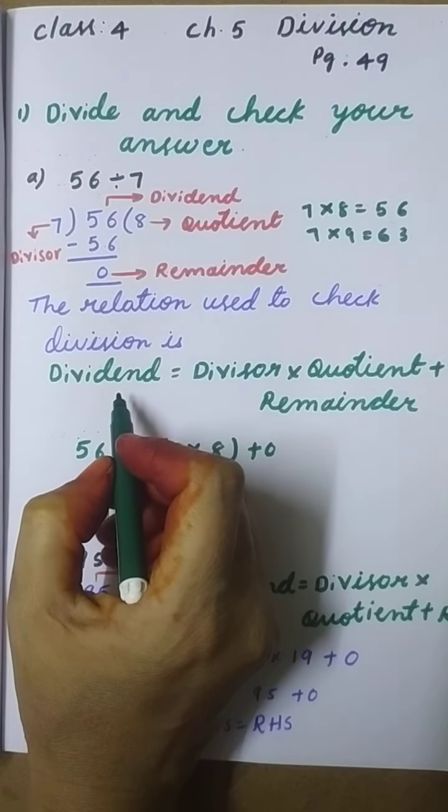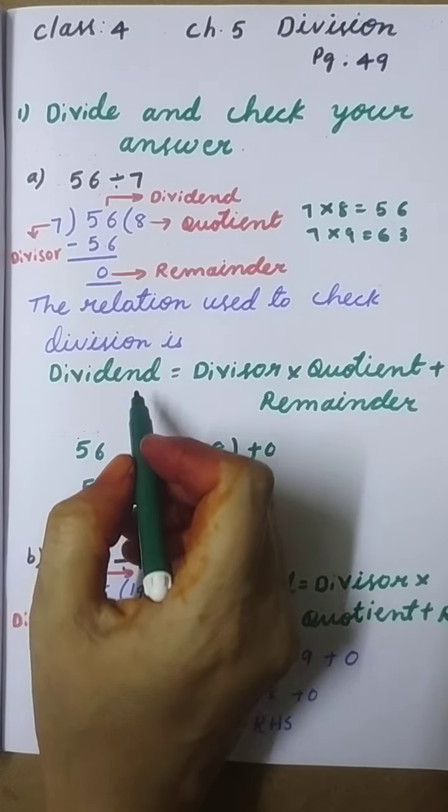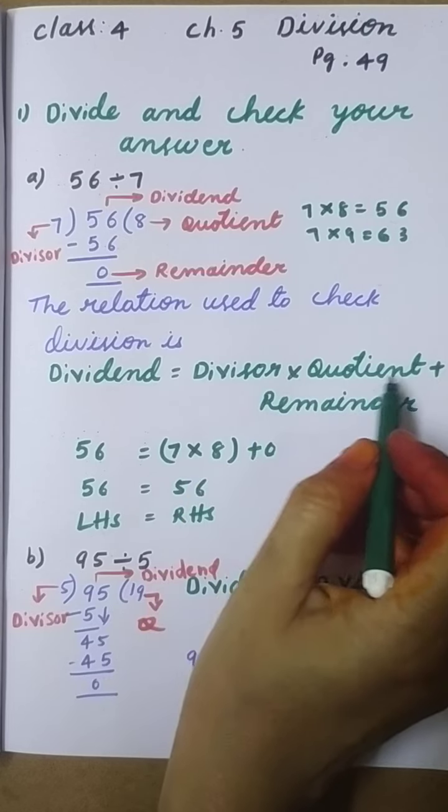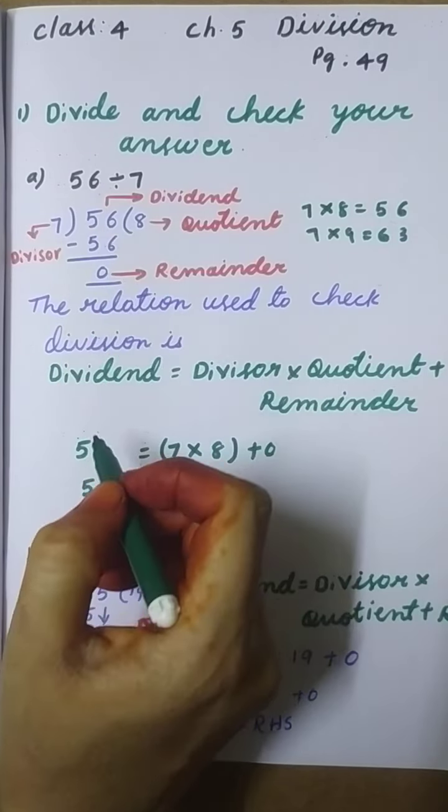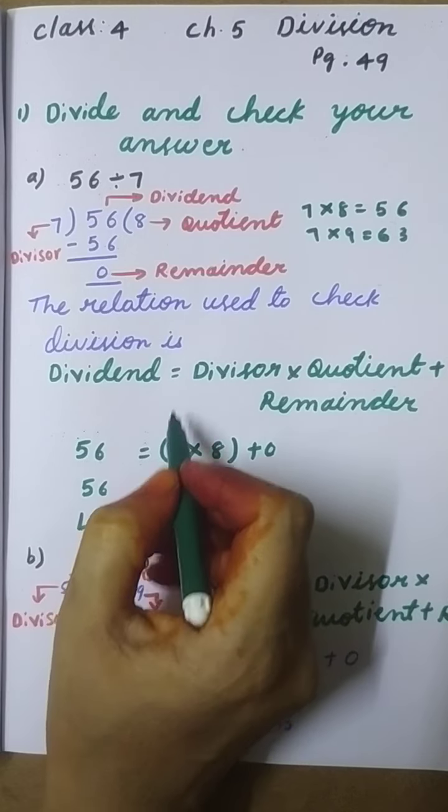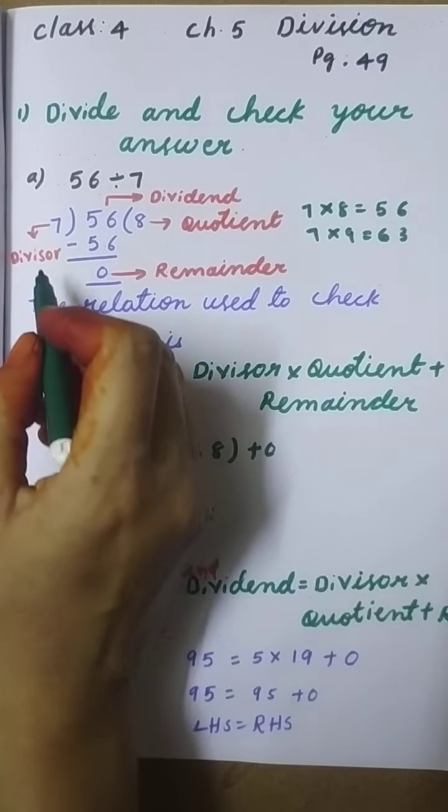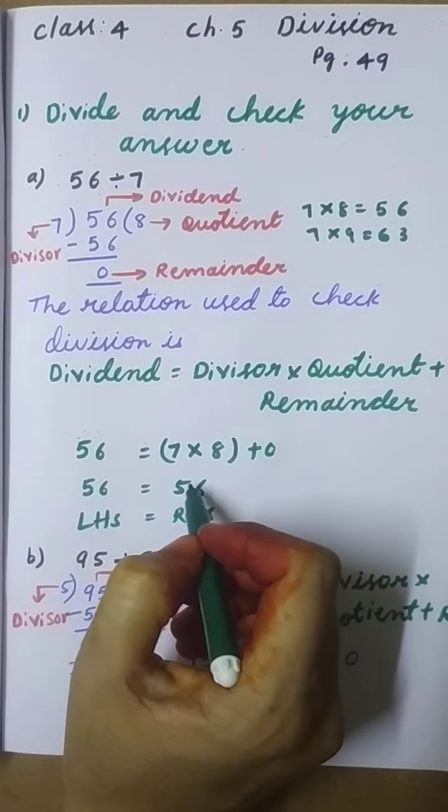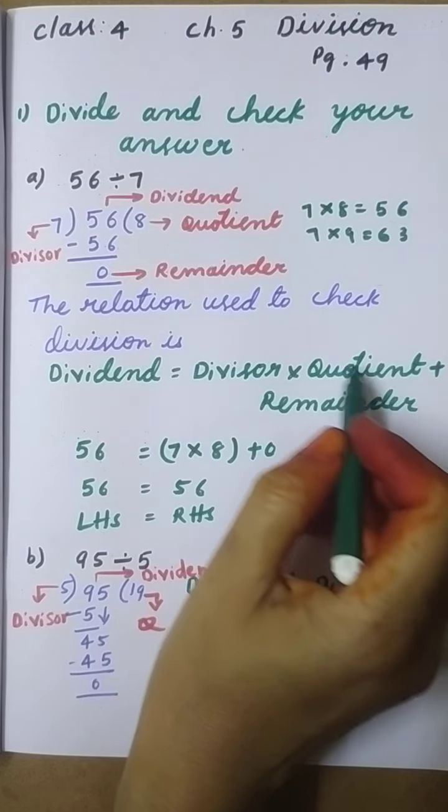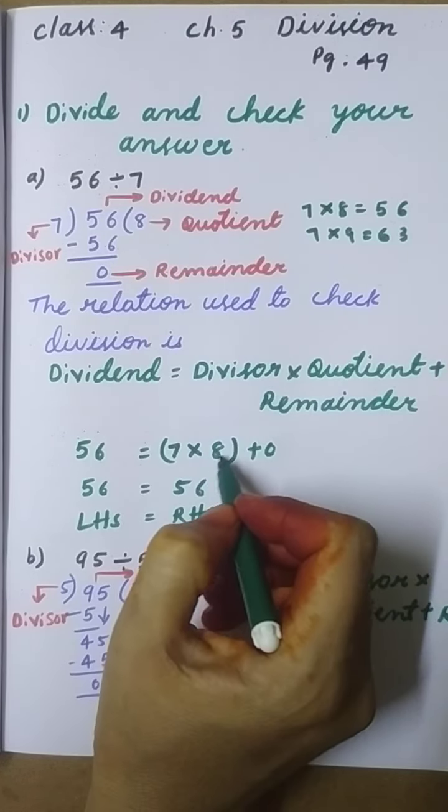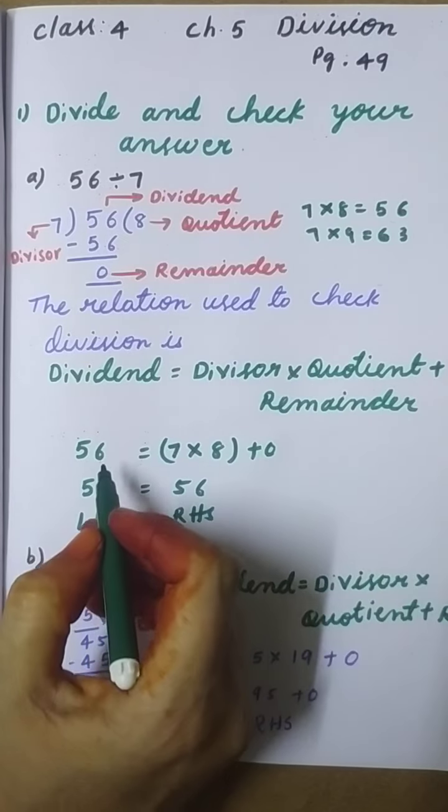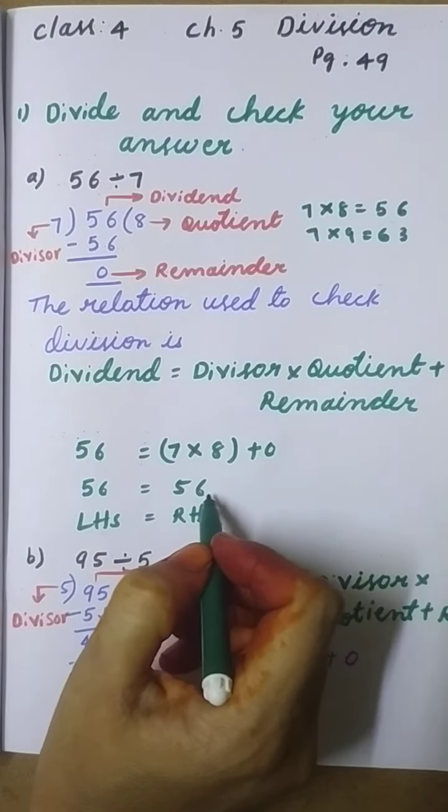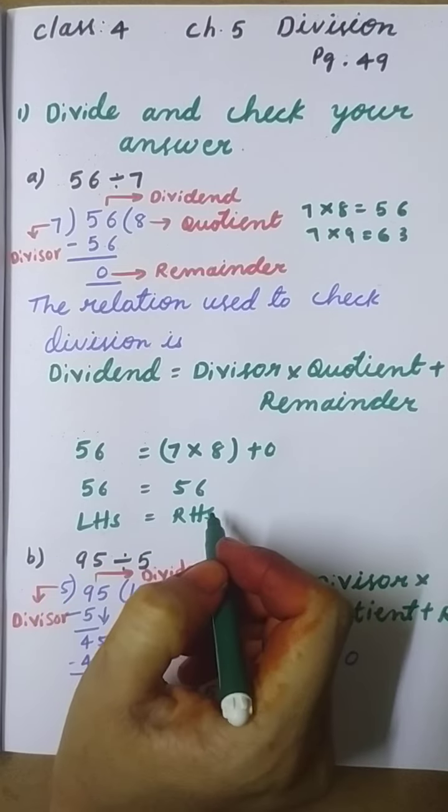Now the relation used to check division is: Dividend equals Divisor times Quotient plus Remainder. What is the dividend here? 56. So we write 56 equals what? The divisor is 7, times the quotient, which is 8, plus the remainder, which is 0. So 56 equals 56. LHS equals RHS.